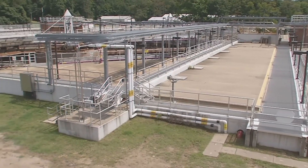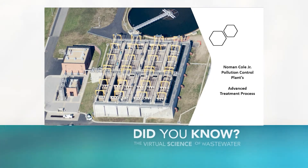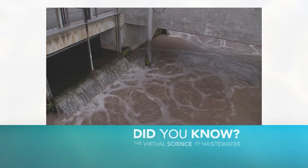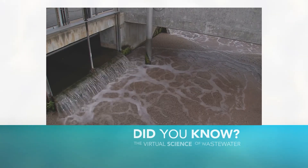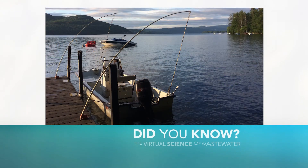Our wastewater has now completed the third of four treatment processes — advanced treatment. Advanced treatment is a physical, chemical, or biological process used to further reduce and remove nutrients, organic matter, and microorganisms. Did you know that in 2003, Nomen Coal installed one of the first and largest moving bed biofilm reactor systems in the United States to help meet enhanced nutrient removal regulations? The installation of this treatment process shows our commitment to continuous improvements and is just another way wastewater management keeps harmful pollutants out of our local waterways.